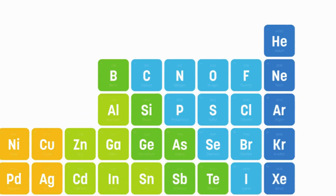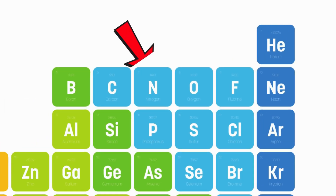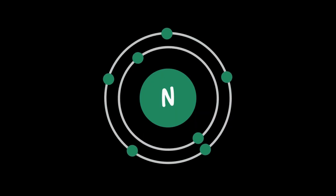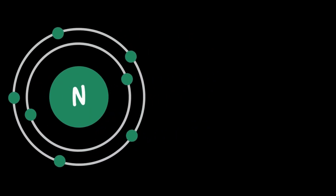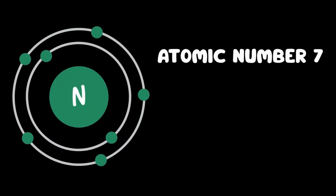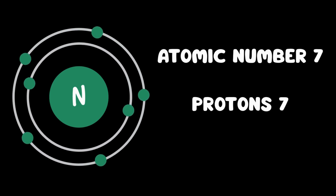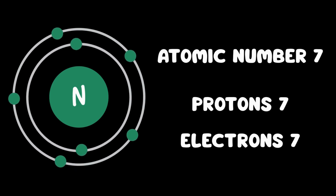Nitrogen is the seventh element in the periodic table. That means it has an atomic number of seven, with seven protons and seven electrons.